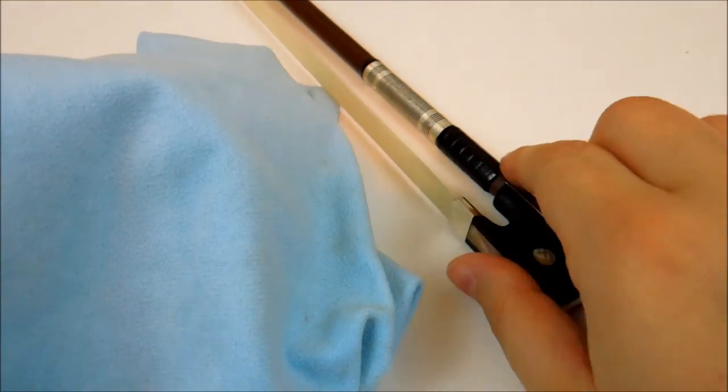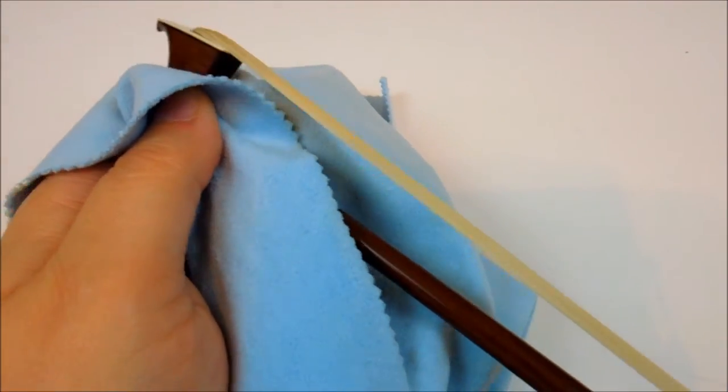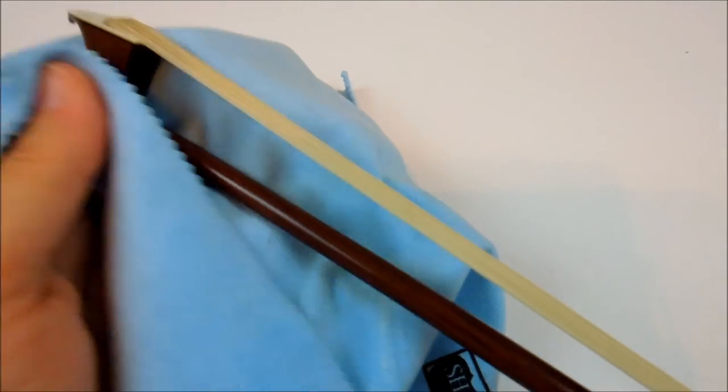I always start with wiping the stick of the bow, just like so. I go back and forth a few times to make sure there's no rosin left.